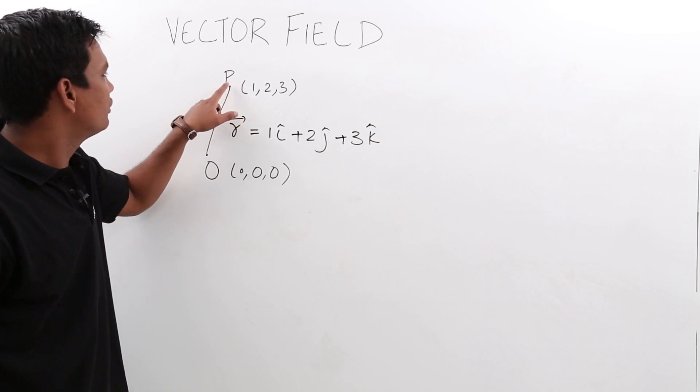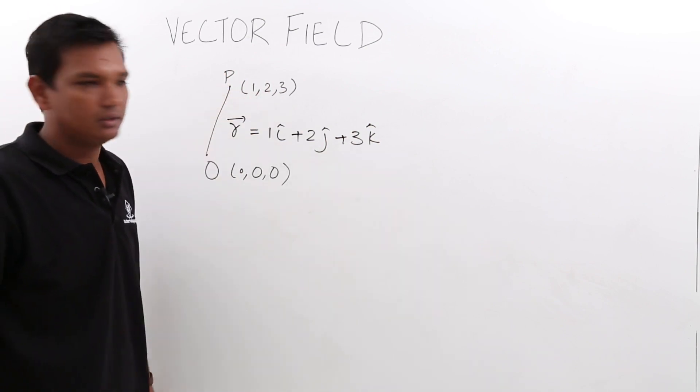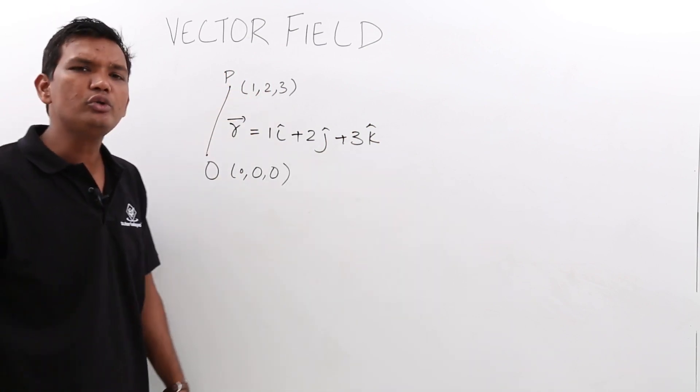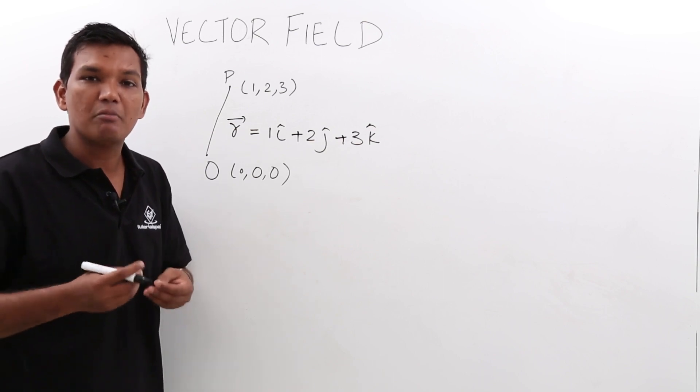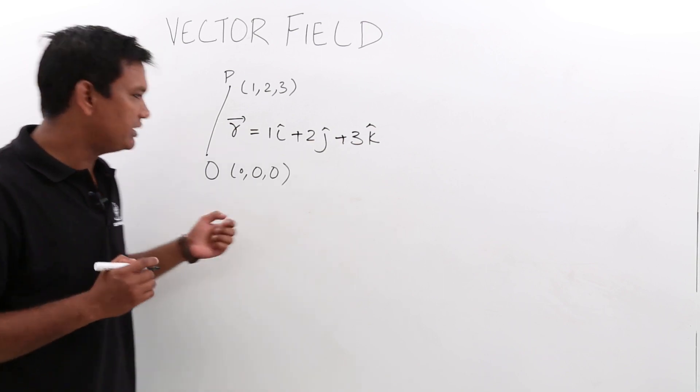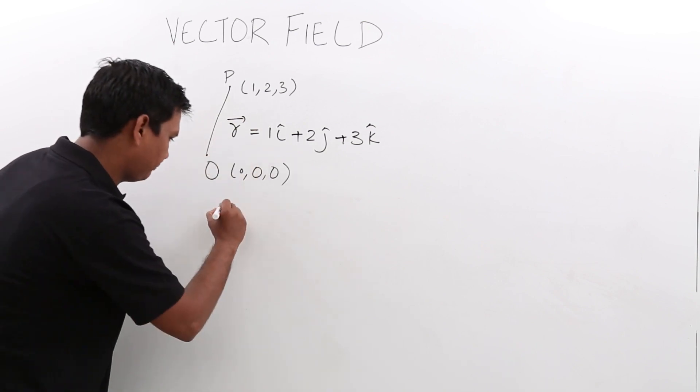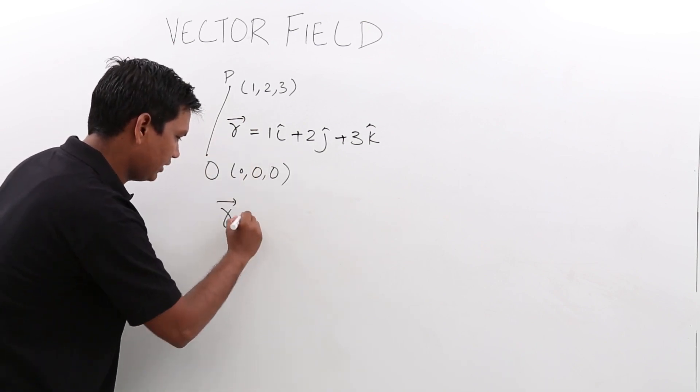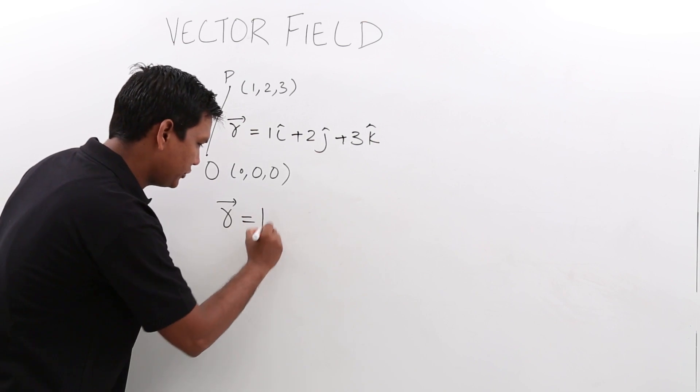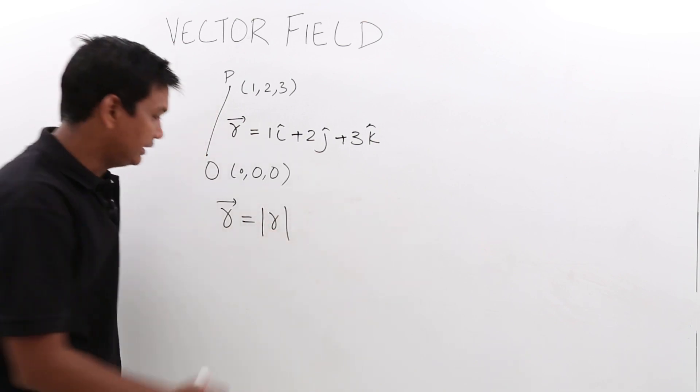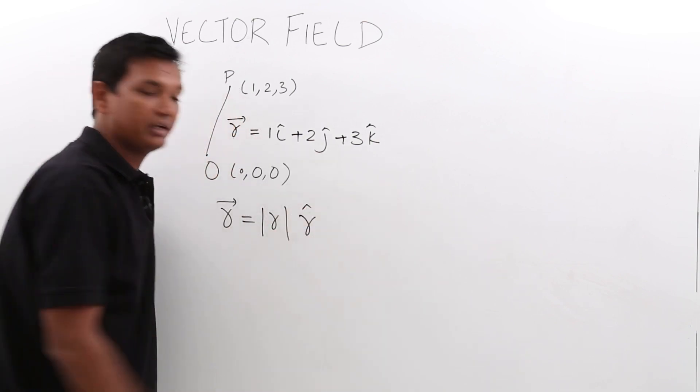This would be the vector for P(1, 2, 3). As you know, a vector has magnitude and direction. If I am writing any vector, for example this same vector, it would be the magnitude of r and the direction given by a unit vector.